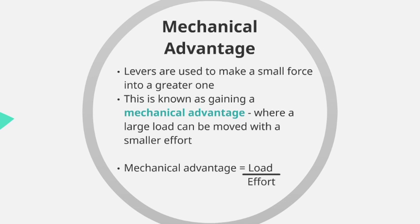The next thing we need to know is mechanical advantage. Levers are used to make a small force greater — this is known as gaining a mechanical advantage. Mechanical advantage is where a large load can be moved with a smaller effort, and is particularly important in how the human body is used in sport. The equation for working out mechanical advantage is load divided by effort, though you shouldn't need to apply that in the exam but it is worth being aware of.